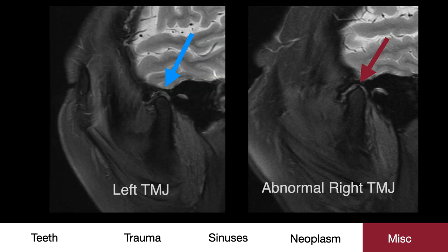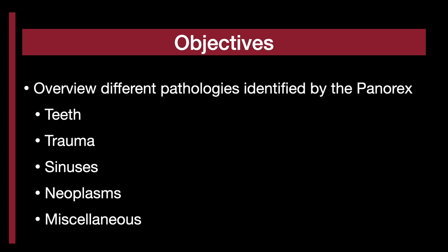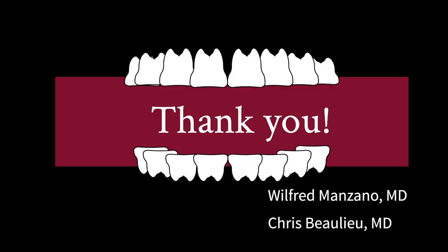As a comparison, here is the contralateral side — see how it is nice, rounded, and smooth compared to the abnormal side. That's how it should look. Well, that wraps it up. This video is by no means comprehensive, but hopefully it got you thinking of how the panorex can bite you. See you next time. Stay tuned for more Stanford Radiology videos.